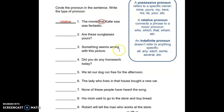Number three: 'Something seems wrong with this picture.' Think about what pronoun can be found in this sentence — I'll give you a second. If you need to go back to the anchor chart in the course, you can. The pronoun in this sentence would be 'something,' and it's indefinite.